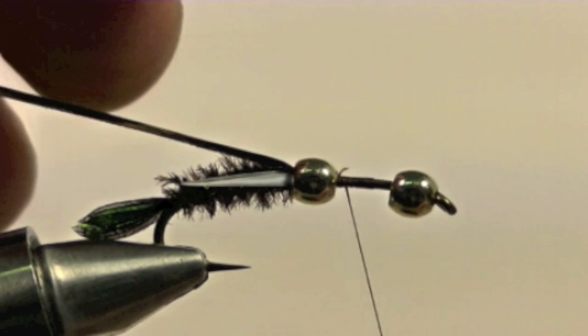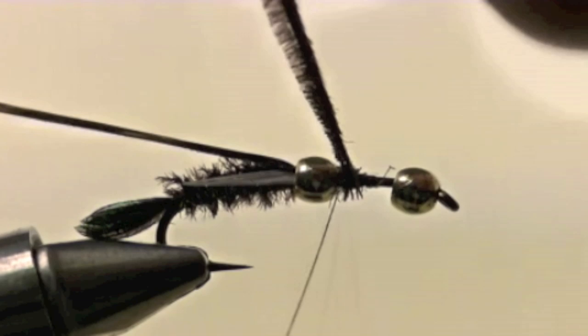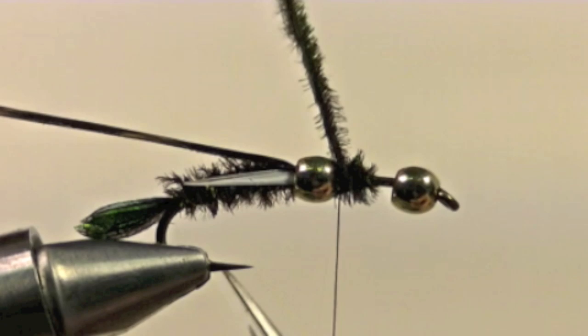Start your thread again. This time we will tie in a few more strands of peacock and begin wrapping the peacock. Try and keep the peacock at a small clump, not getting too far forward because we don't want to crowd the first bead.